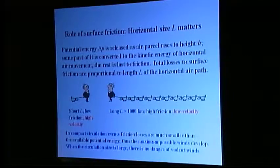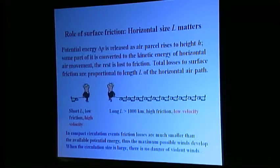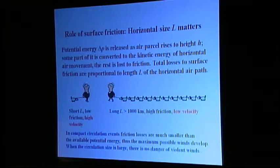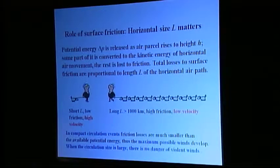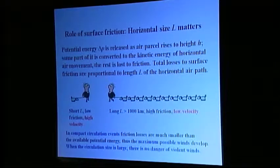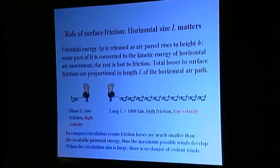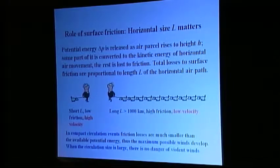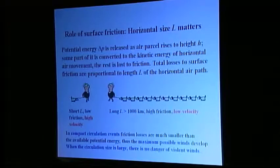Now we understand the physical causes of why the dangerous winds form. We will now see how forests prevent their formation. To do so, we have to look at the effects of turbulent surface friction. Potential energy delta p is released as the air parcel rises to height h. Some part of it is converted to the kinetic energy of air movement; the rest is lost to friction. Total losses to surface friction are proportional to length l of the horizontal air path. If, while rising to height h of a few kilometers, the air moves by several dozens or even hundreds of kilometers in the horizontal direction — as in hurricanes and tornadoes — the turbulent friction losses appear to be much smaller than the available potential energy delta p. Hence, maximum possible winds develop.